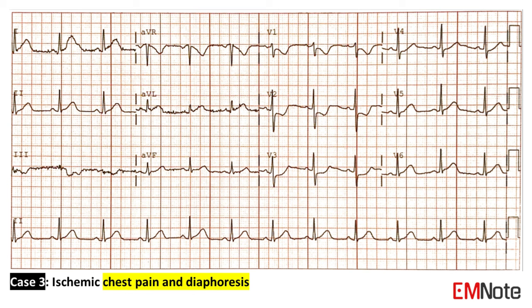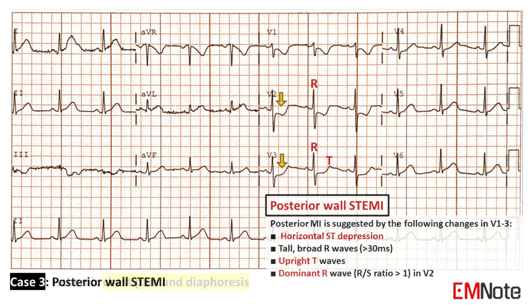Case 3: The patient presents with ischemic chest pain and diaphoresis. The ECG shows a posterior wall STEMI. Posterior wall STEMI is suggested by the following changes in leads V1 to V3: horizontal ST depression, tall and broad R waves greater than 30 milliseconds, upright T waves, and dominant R wave in V2.